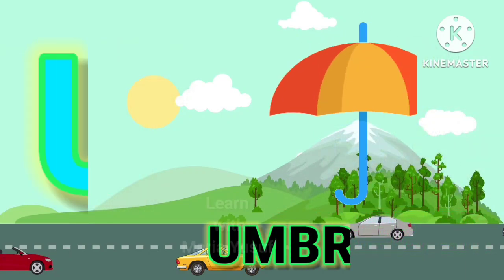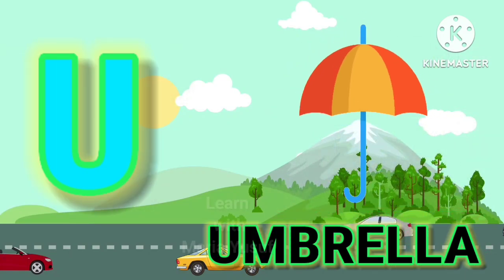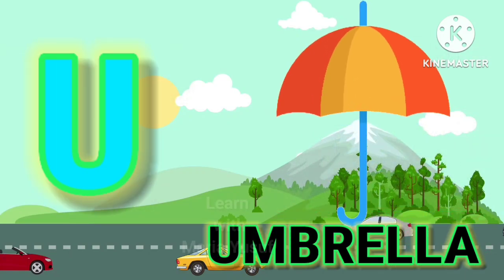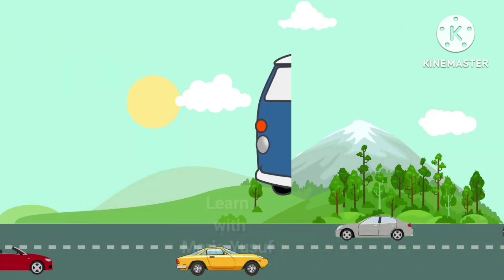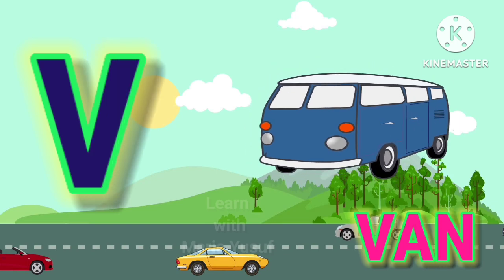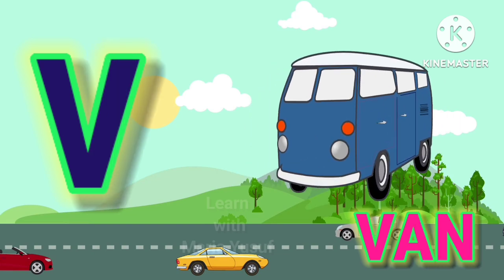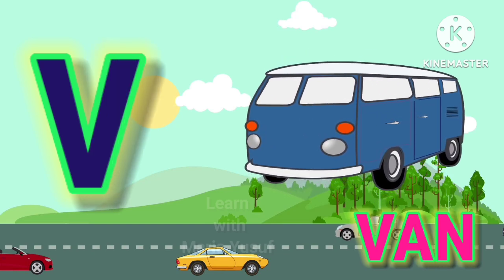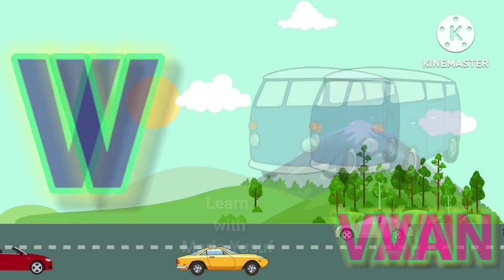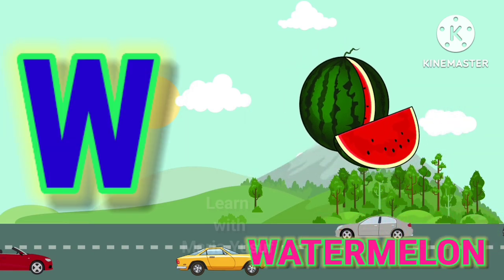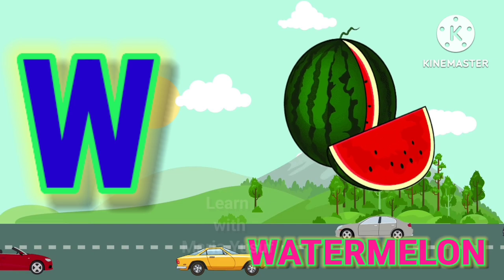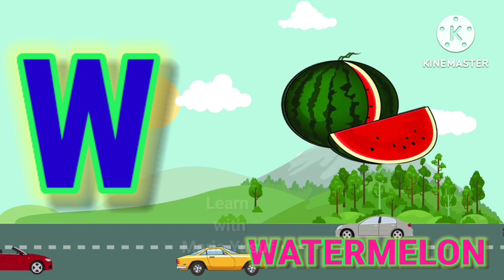U for Umbrella, V for Van, W for Watermelon.